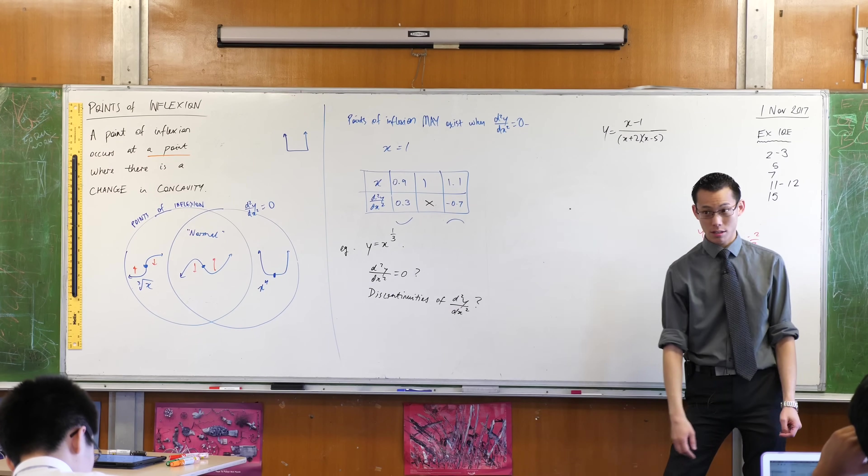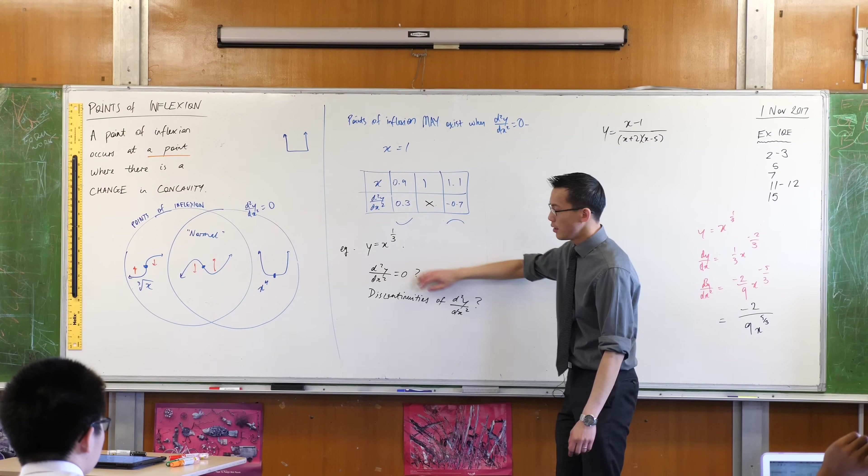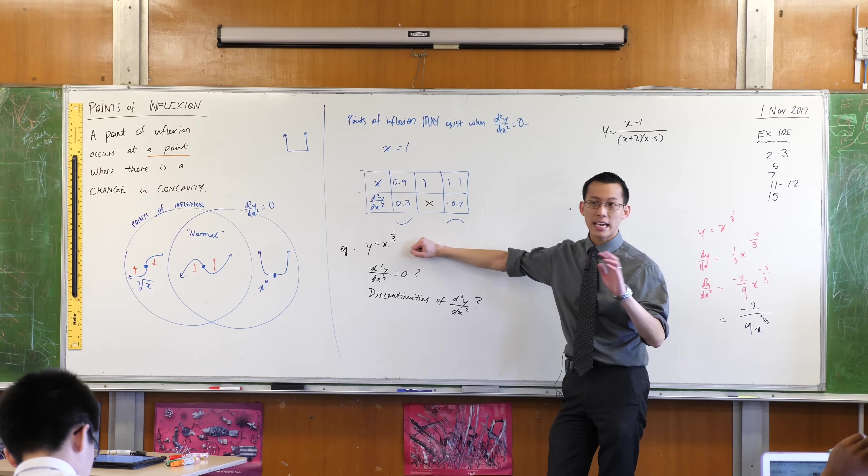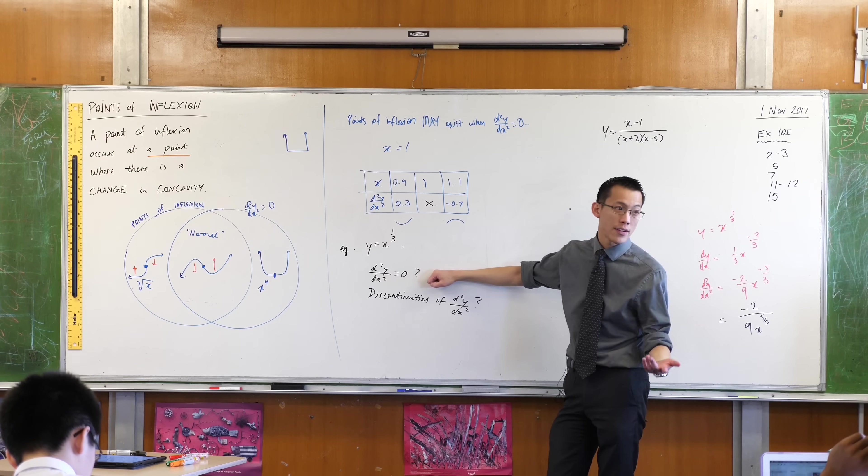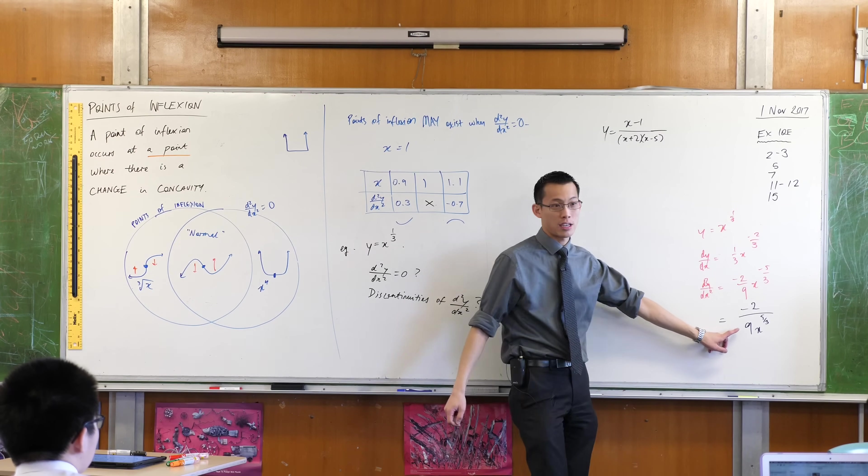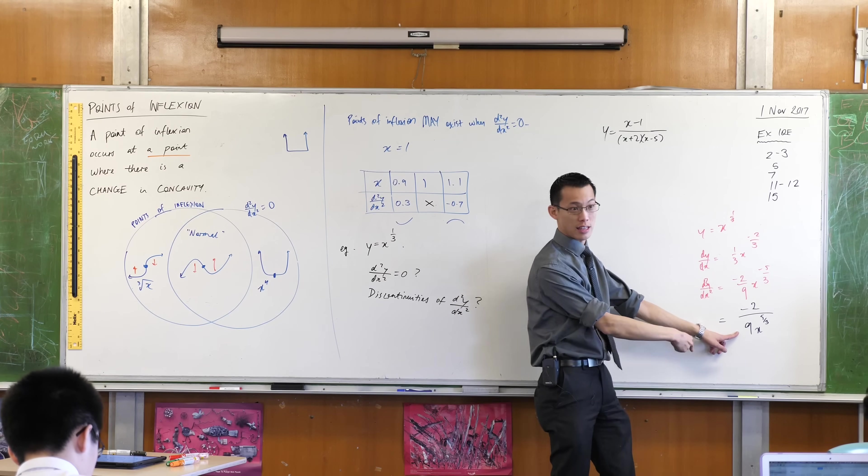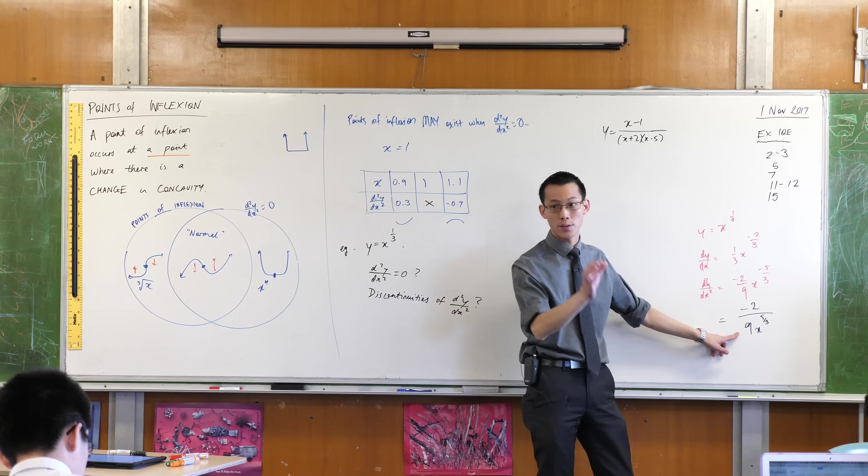This cube root of x guy, so sorry, I forgot to mention this before. This cube root of x, its second derivative is never zero. It never happens. Because here it is. Here's the second derivative. There's no value of x you can stick in there that gives you a second derivative of zero.